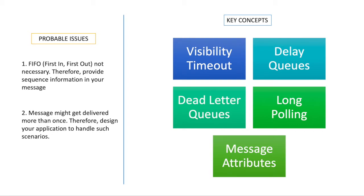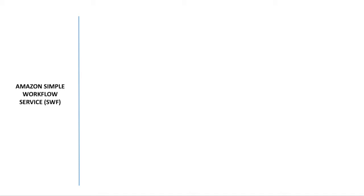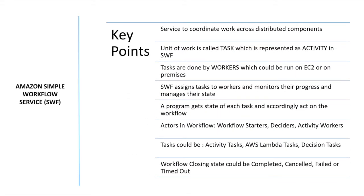The third important attribute is a receipt handle. Whenever a message gets received, a receipt handle is provided. The purpose of this receipt handle is to indicate that it is good to get deleted - because until a message has been received it cannot be deleted. You need some mechanism to know that it has already been received before you can delete it. These are the key concepts around SQS.